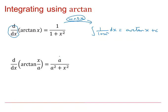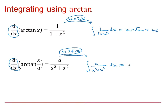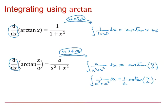Looking at the more general case, integrating both sides with respect to x: the right-hand side becomes the integral of a over a squared plus x squared dx, and integrating the derivative of arctan(x/a) gives arctan(x/a). Dividing both sides by a, this is normally written as: the integral of 1 over a squared plus x squared dx equals 1 over a times arctan(x/a), plus a constant of integration.